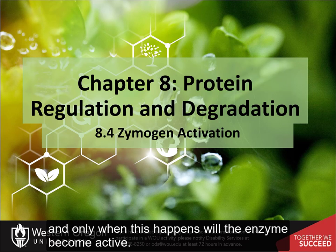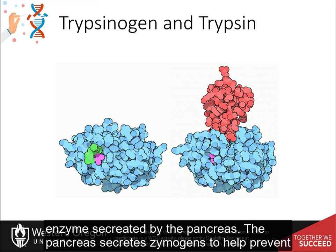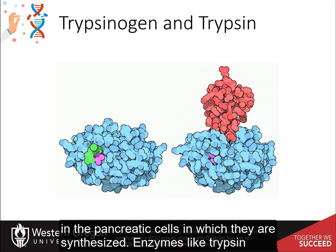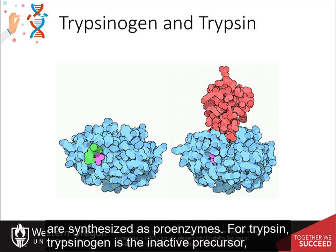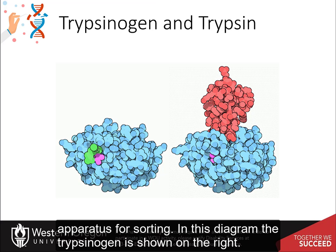Only when this happens will the enzyme become active. An example of enzymes initially synthesized as zymogens are the protease enzymes secreted by the pancreas. The pancreas secretes zymogens to help prevent the enzymes from inappropriately digesting proteins in the pancreatic cells in which they are synthesized. Enzymes like trypsin are synthesized as proenzymes; trypsinogen is the inactive precursor translated in the rough endoplasmic reticulum and transported to the Golgi apparatus for sorting.